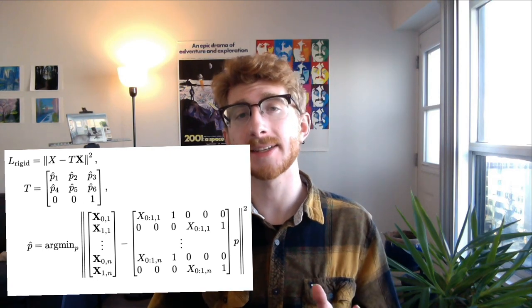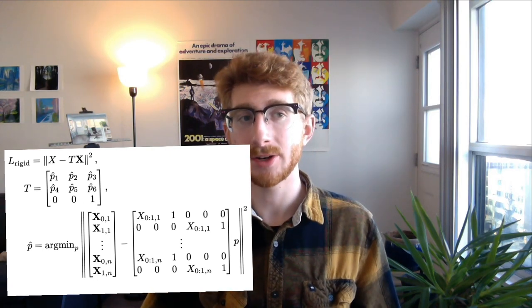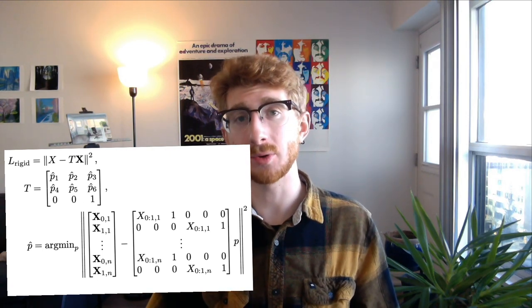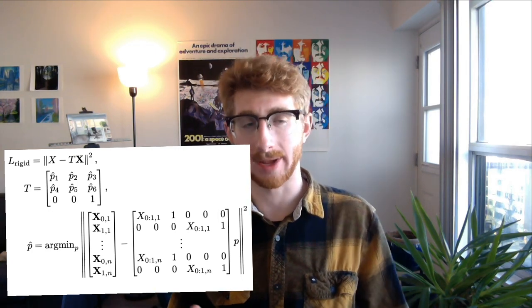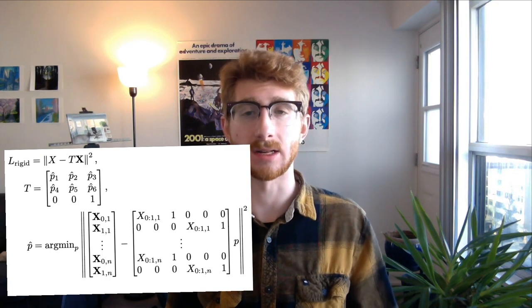From rule number two, we get a loss term that incentivizes the optimized jean shape to be as close as possible to an affine transformation of the prototypical jeans. So any deviation from like a perfect transform, that adds to the loss.